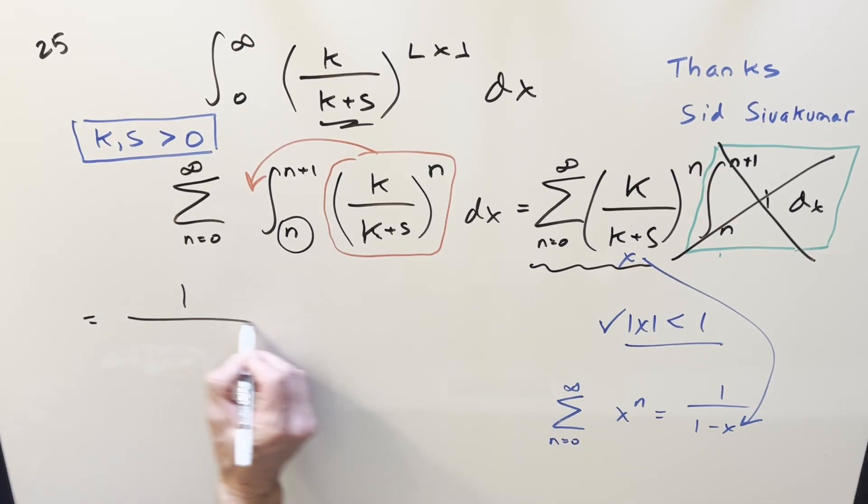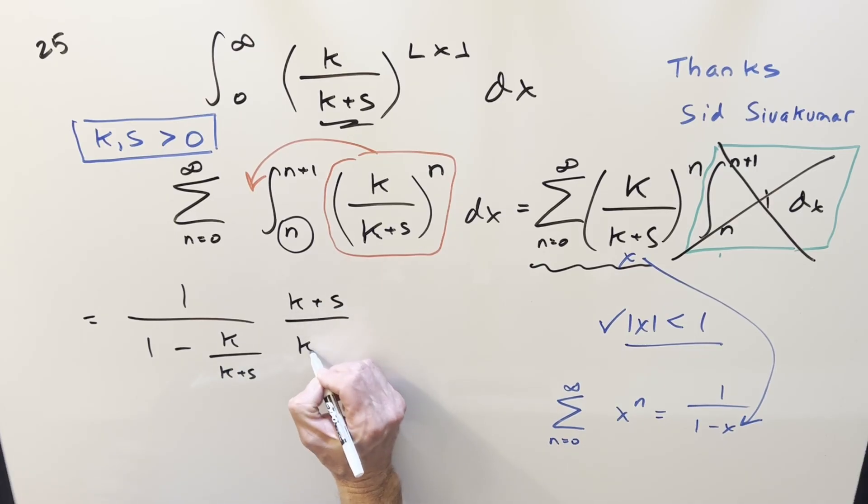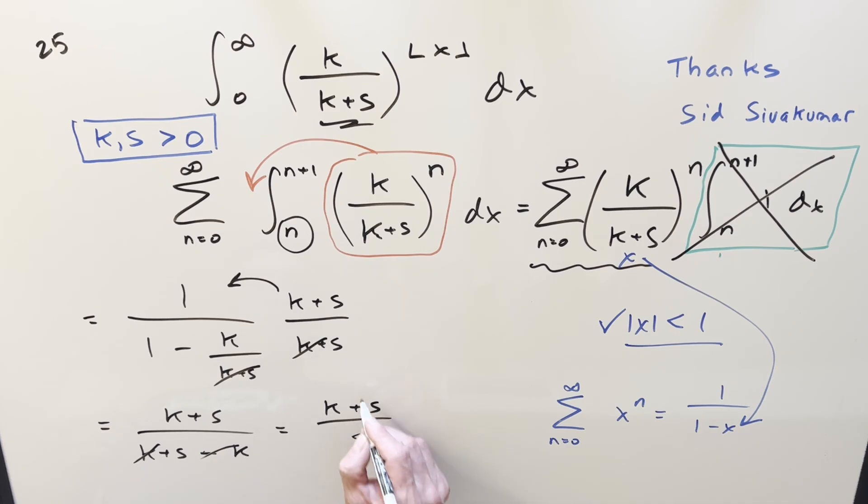So doing that, what we're going to get is just 1 over 1 minus k over k plus s. Then to simplify, let's multiply in k plus s over k plus s just to clear this out of the denominator. So multiplying everything in, what we're going to get is k plus s over k plus s times 1. So we have k plus s. Here, this is going to cancel out and we get minus k. But k minus k, that's going to be a 0. And so for my final solution on this, we just get k plus s over s and that's it.